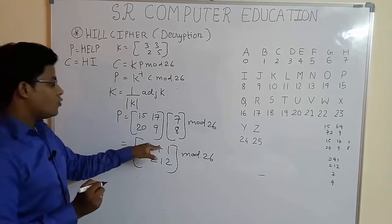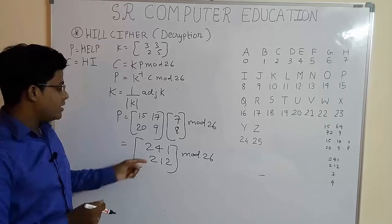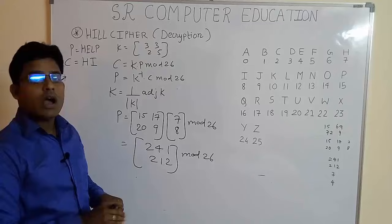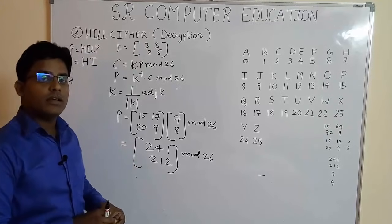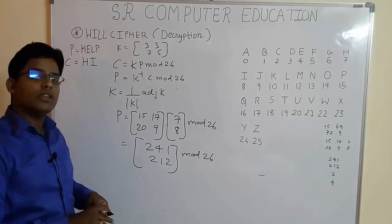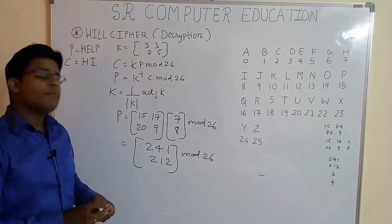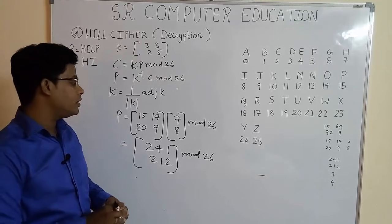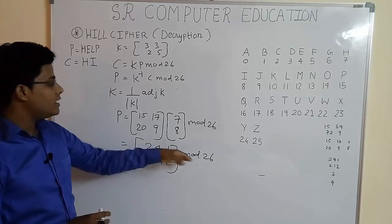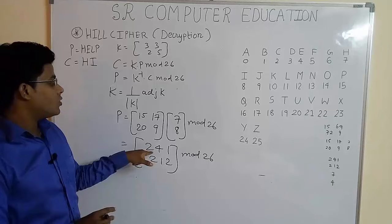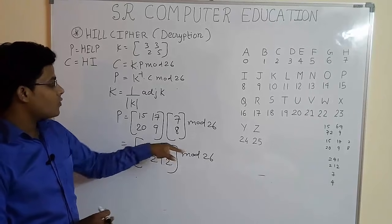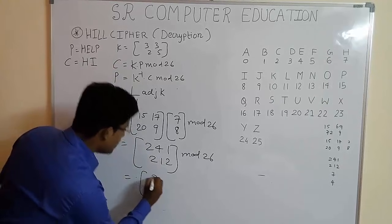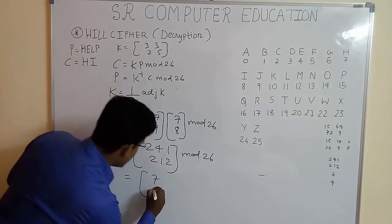Now do the mod operation here: 241 modulo 26 and then 212 modulo 26. I hope you had watched my video how to do mod operation very quickly using calculator because calculator is allowed in your examination. So I had uploaded a separate video for finding the mod operation. If you had not watched it, I strongly recommend it. Watch it and come back. So finding the result of mod operation, we get 241 modulo 26 is 7, and 212 modulo 26 is 4.